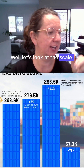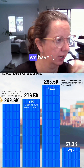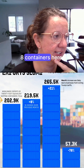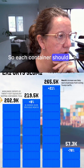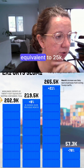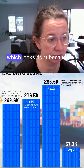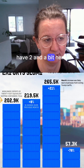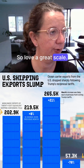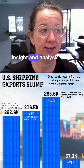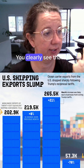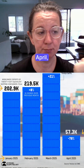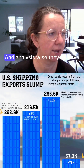Looking at the scale, for our 200 we have eight containers here, so each container should be equivalent to 25k — which looks right because we have two and a bit here. Love a great scale.